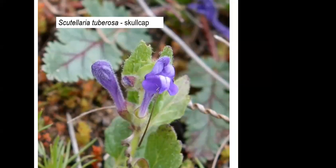Scutellaria — skullcap — is a fun one with a fun name to say. To me it looks like the gaping mouth of some animal with a tongue that sticks out. This close-up flower is probably about three-quarters of an inch long — they're very small. You have to get really close; sometimes you can turn your binoculars around backwards and use them as a hand lens.